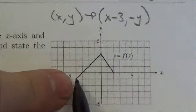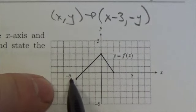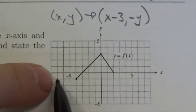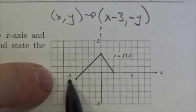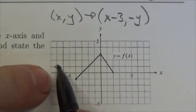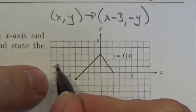So negative four minus three is negative seven—one, two, three, there's my negative seven. And then instead of being negative one, it's gonna go up to positive one. Here's where that new point is going to be.